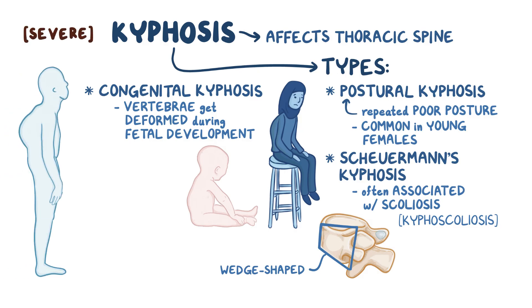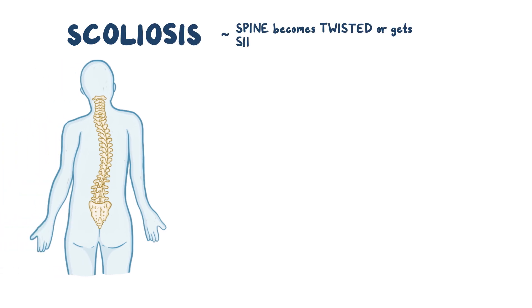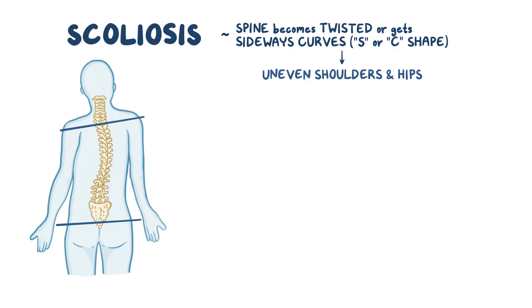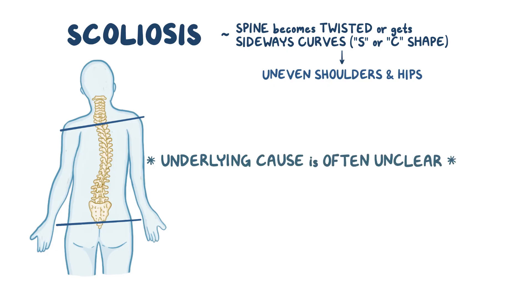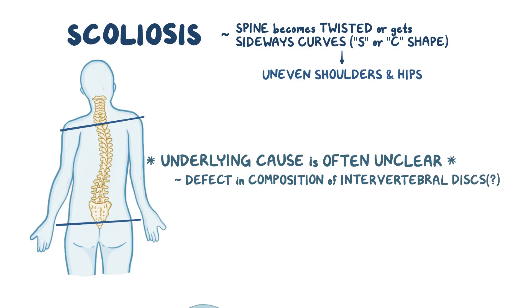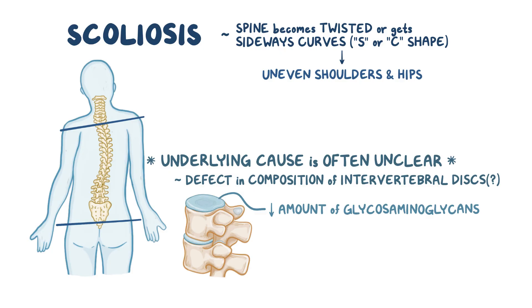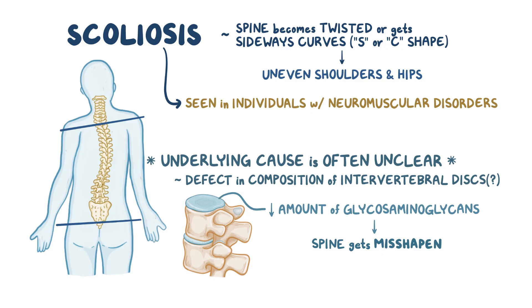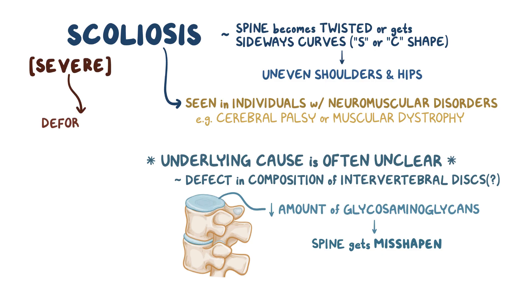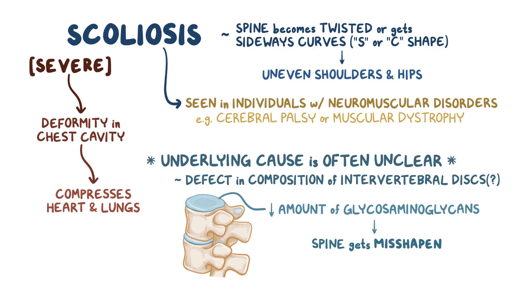In general, if the condition is severe, it can reduce the space in the thoracic cavity, which can compress the heart and prevent the lungs from fully expanding. Finally, there's scoliosis, which is when the spine becomes twisted or develops a sideways curve, resembling an S or a C shape, often resulting in uneven shoulders and hips. The majority of the time, the underlying cause is unclear, and it's thought that it may be due to a defect in the composition of the intervertebral discs. These discs have a reduced amount of glycosaminoglycans, which changes their ability to act as shock absorbers and causes the spine to become misshapen. Scoliosis is often seen in individuals with neuromuscular disorders that cause progressive muscle weakness, like cerebral palsy or muscular dystrophy. In severe scoliosis, there can be a deformity in the chest cavity, compressing the heart and the lungs, similar to what's seen in severe kyphosis.